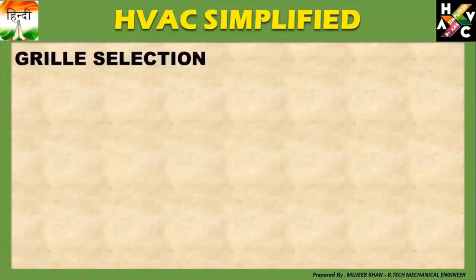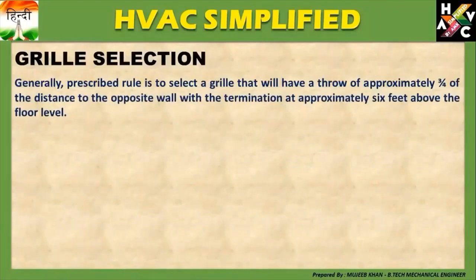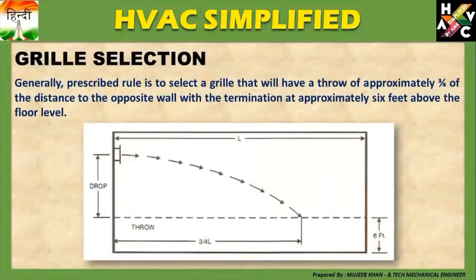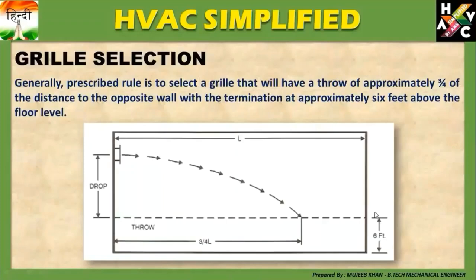आइए अब हम एक Example द्वारा देखते हैं इन grills का selection किस प्रकार से होता है। Generally Prescribed Rules: select a grill that will have a throw of approximately three-fourth of the distance of the opposite wall, with the termination of approximately six feet above the floor level। इसका मतलब यह है कि Supply Air Grill का throw, opposite wall की maximum distance का three-fourth होनी चाहिए, और throw की maximum height six feet होनी चाहिए from the floor level। Airflow का drop six feet पर होता है, और opposite wall का three-fourth distance को हम throw कहते हैं।